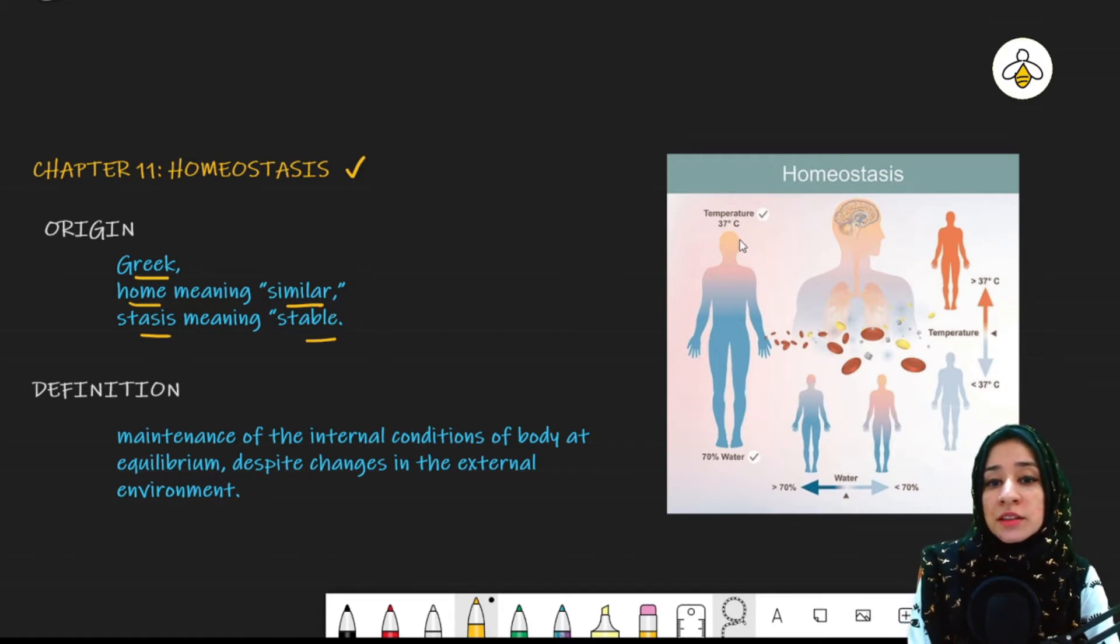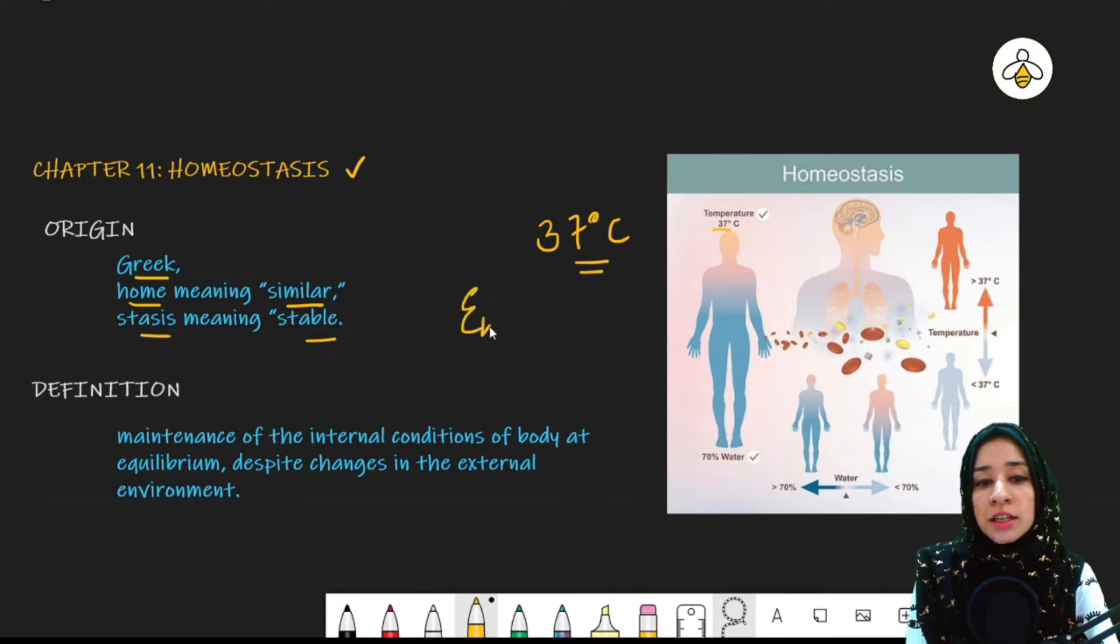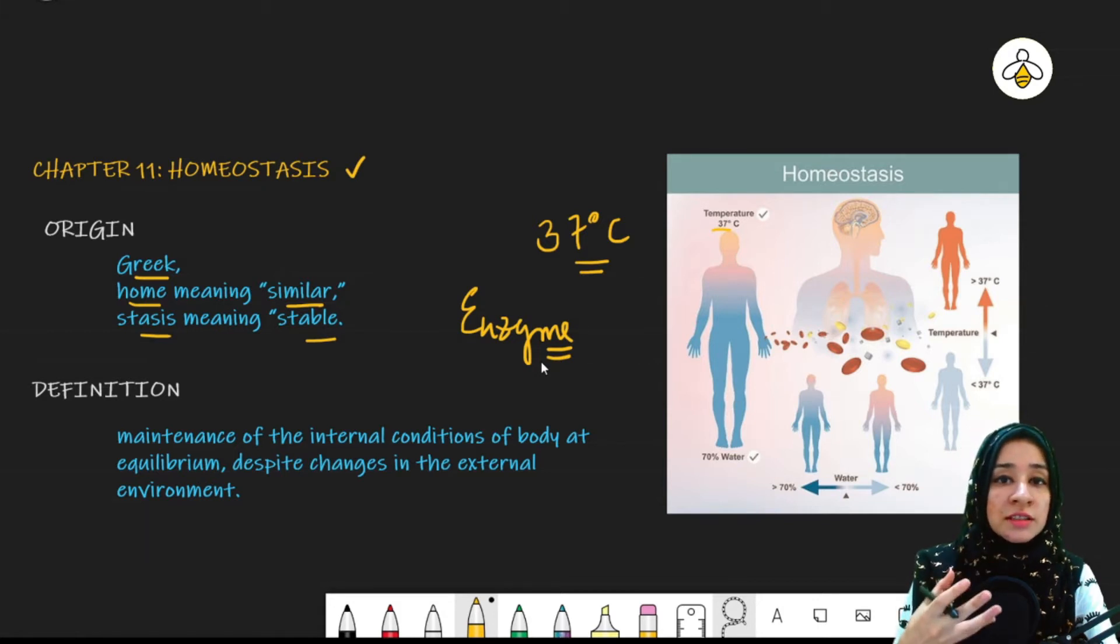For example, the temperature of human body is 37 degrees celsius. So this temperature is required, is necessary to maintain the proper condition of our body.